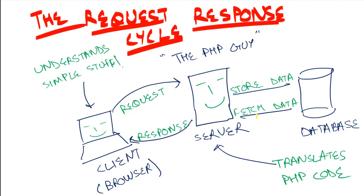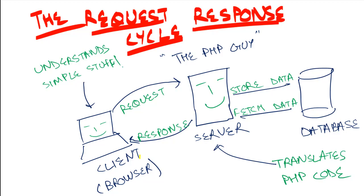Let's talk about something called the request-response cycle. You have a client, which is your browser — it could be Firefox, Google Chrome, or Internet Explorer. Then you have a server, where all the web pages are stored. The client requests web pages from the server, and the server responds. The client cannot understand PHP — it can understand HTML, CSS, and client-side scripting like JavaScript, but not PHP. So if a page has PHP code, the server must first parse that PHP code and send HTML output to the client.